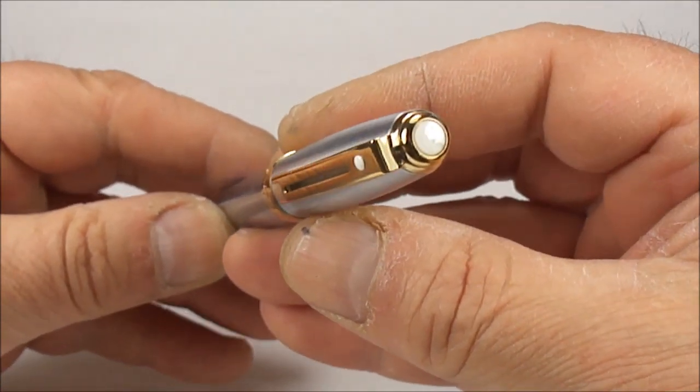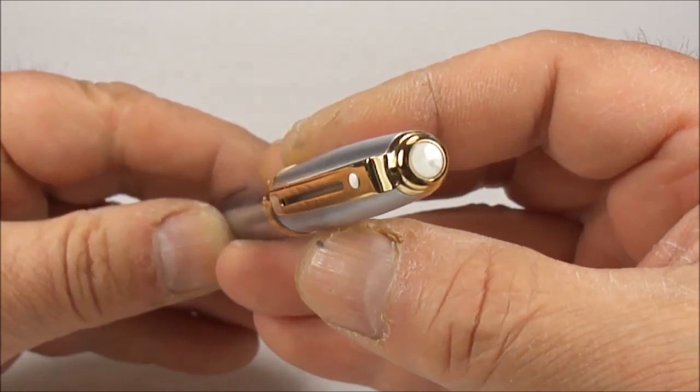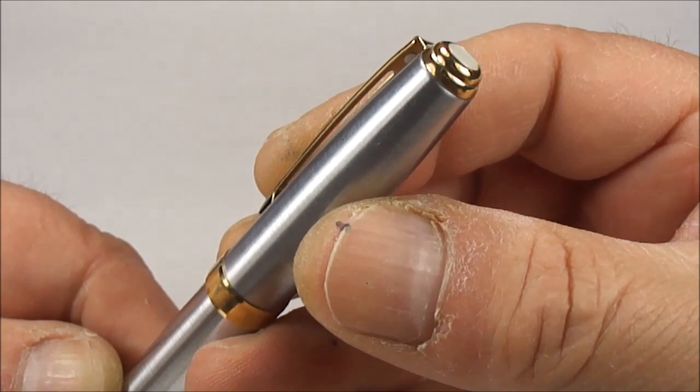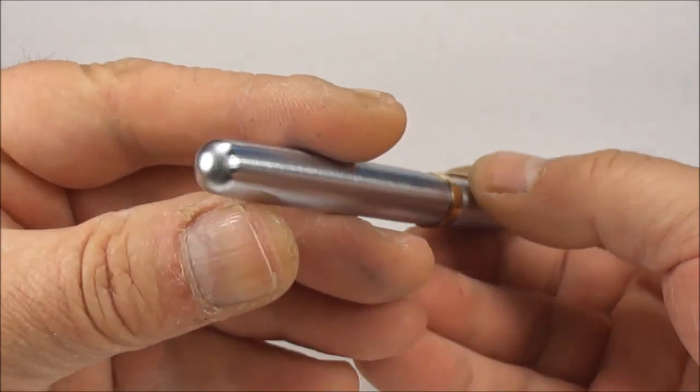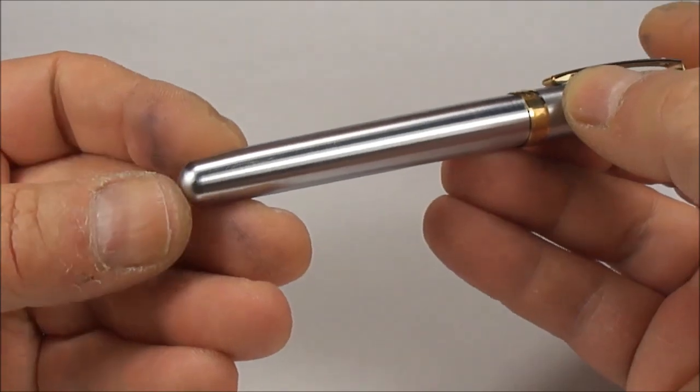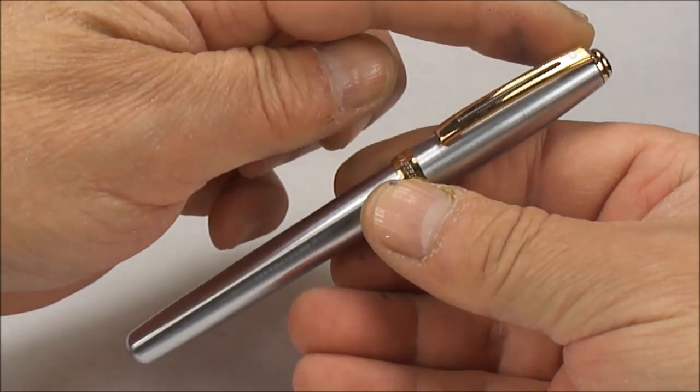If we show the top of the cap there, you can see it's got this sort of white opaque jewel to the very top of the cap with a gold band around it. And the bottom of the barrel there, you can see it's quite a rounded section to the bottom of the barrel.